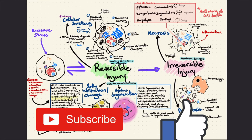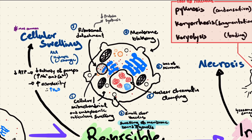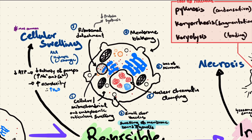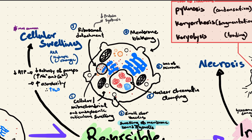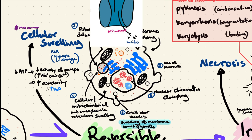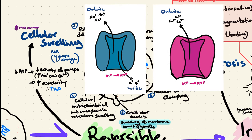Let's look at reversible injury, specifically cellular swelling. The swelling of membrane-bound organelles is a hallmark of reversible injury. Cellular swelling, also known as hydropic change, is the most common form of cellular injury because almost all forms of stress will lead to impaired production of ATP. If a cell cannot produce ATP effectively, all ATP-dependent ion channels will not be able to function, meaning there will be an accumulation of sodium and calcium within the cell, as the ATP-dependent sodium-potassium and calcium ion channels will not function.